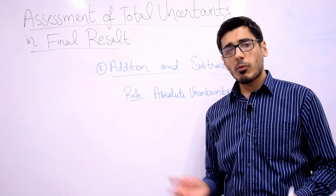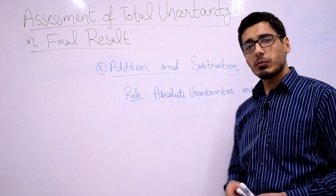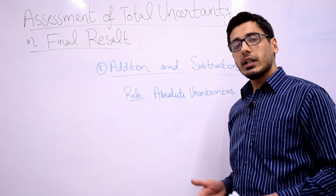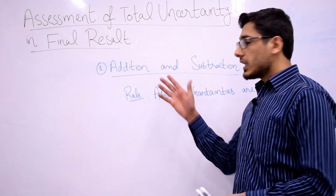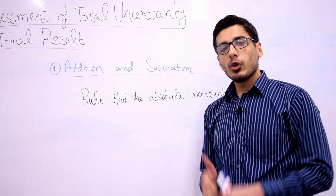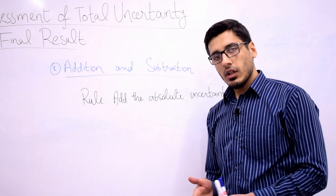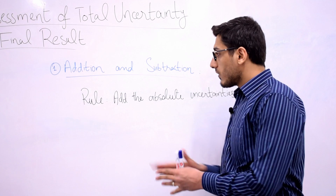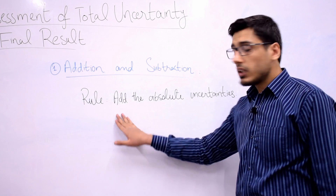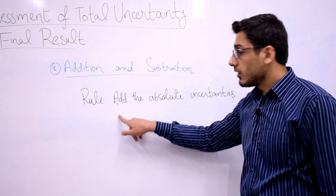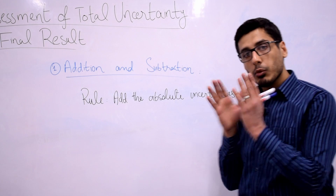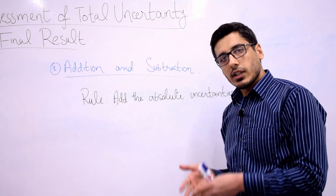Let's move further and talk about our first case, which is addition and subtraction. We are going to talk about how to calculate the total uncertainty when dealing with addition and subtraction cases. The rule says that in order to calculate the uncertainty in the final result, you need to add the absolute uncertainties associated with both measurements.